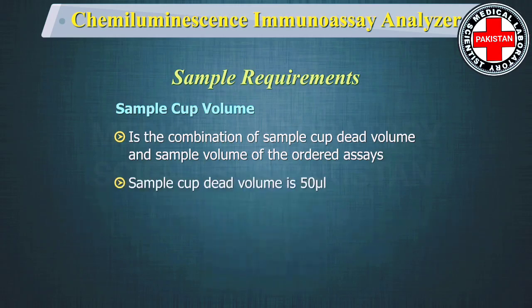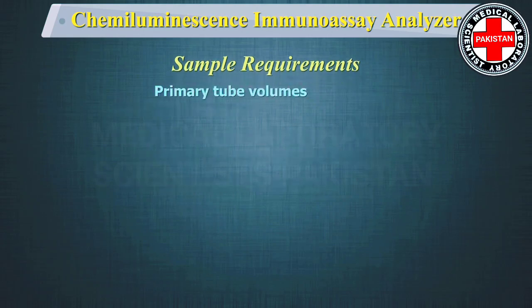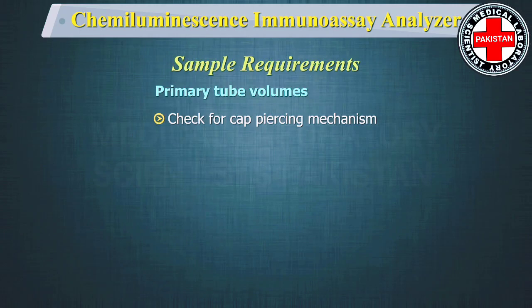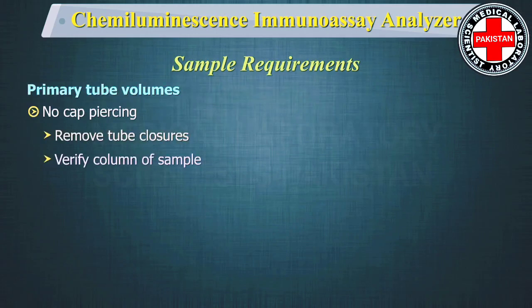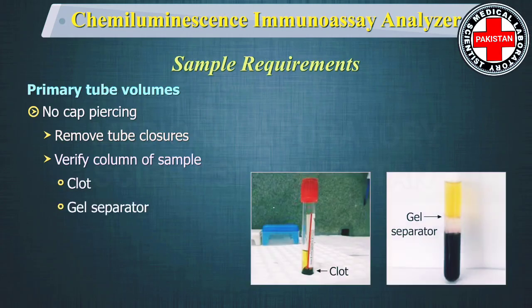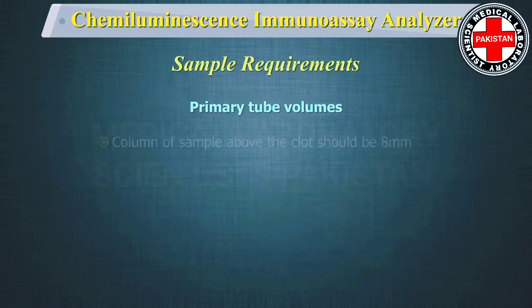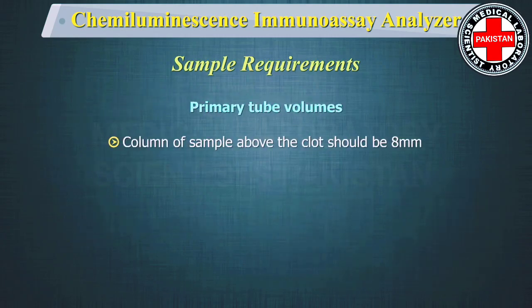For this machine, the sample cup dead volume is 50 µL. When using primary tubes, determine if your equipment has a cap-piercing mechanism. If not, remove any tube closures and verify from the user manual the column of sample that should be available above the clot, gel separator, or plasma or red cell interface. For this machine, the column of sample above the clot should be 8 mm.